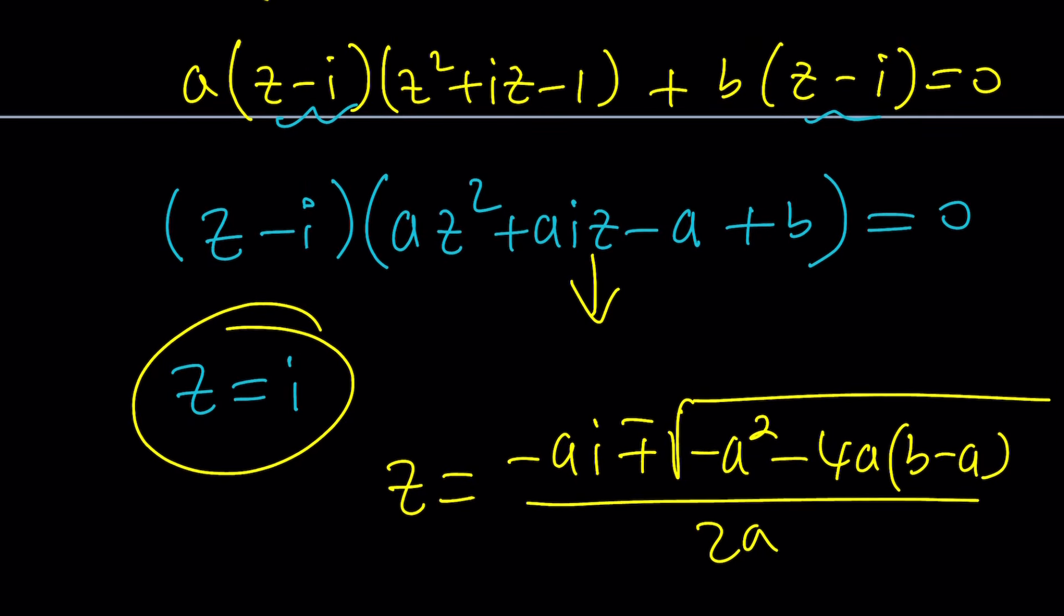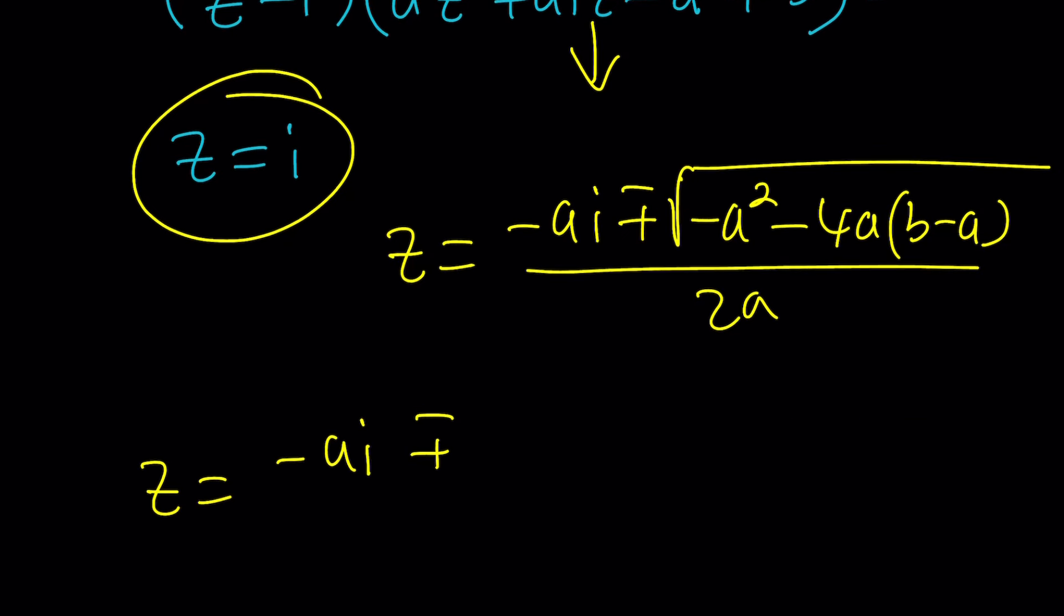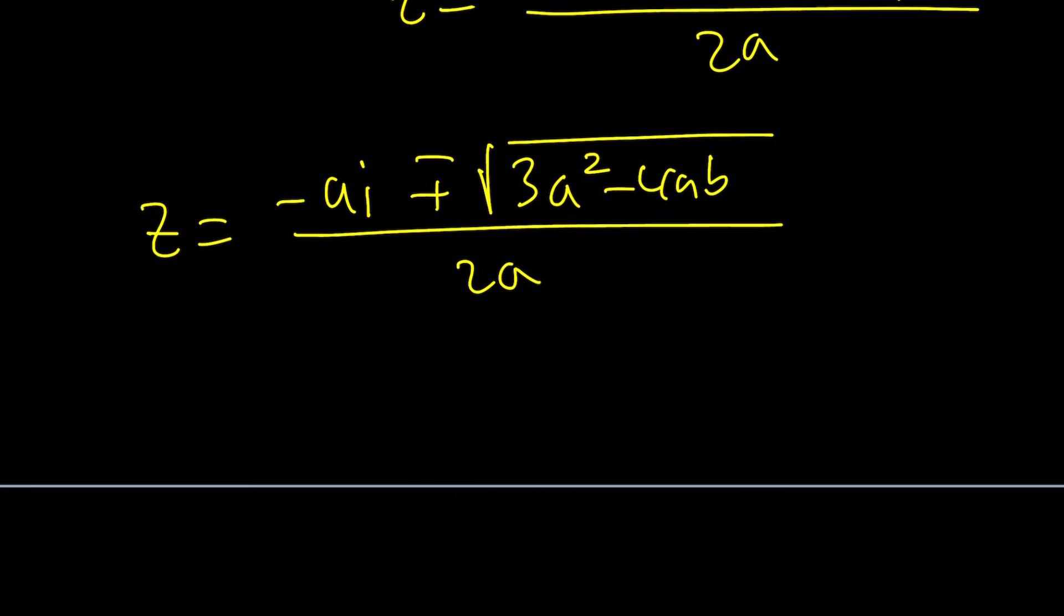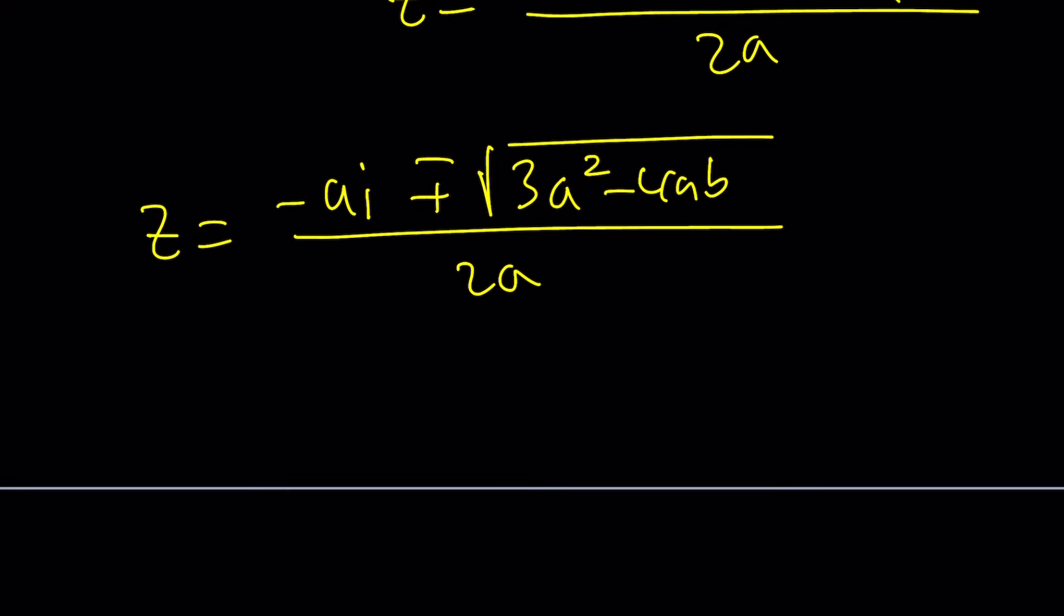Wait, I should be getting, let me check something real quick. B squared minus 4A times B minus A. Okay, that makes sense. So this is going to give me 4A squared minus A squared is going to give me 3A squared minus 4AB. I hope I didn't make any mistakes. Divide by 2A. And then this should give us the other two solutions.